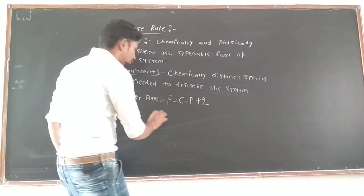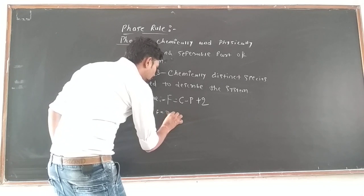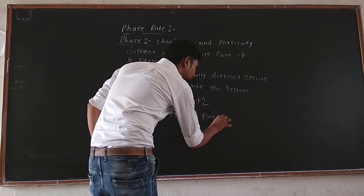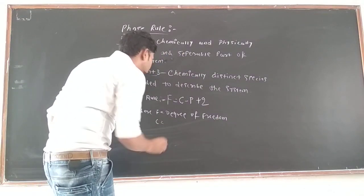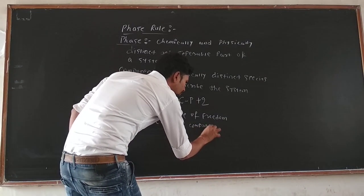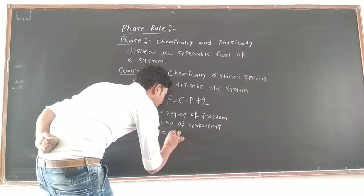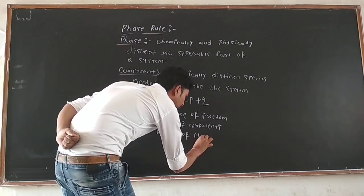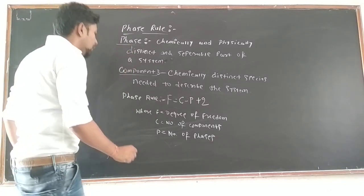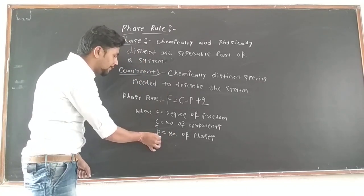In this formula, F means the degree of freedom, C means the number of components, and P means the number of phases. Phase rule mainly consists of the number of components and the number of phases, and on the basis of these we calculate the degree of freedom.